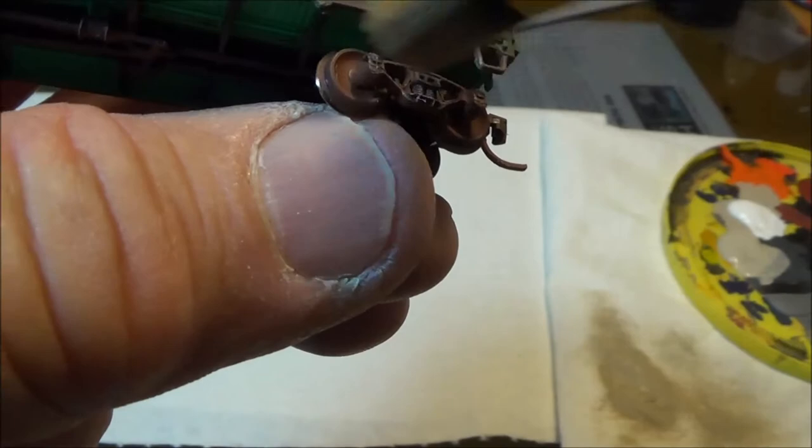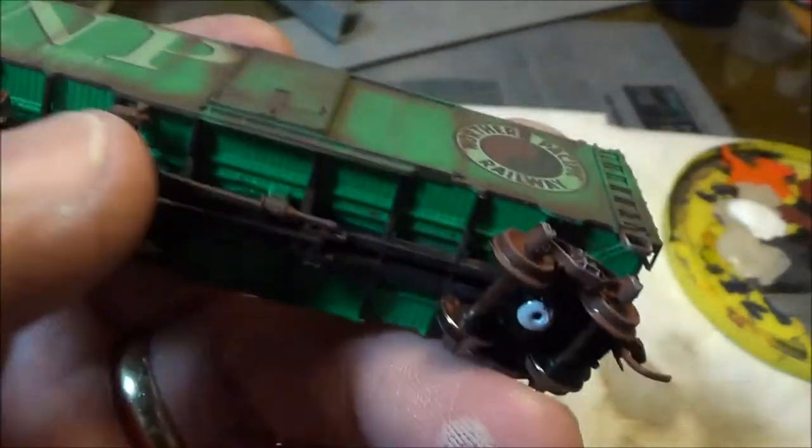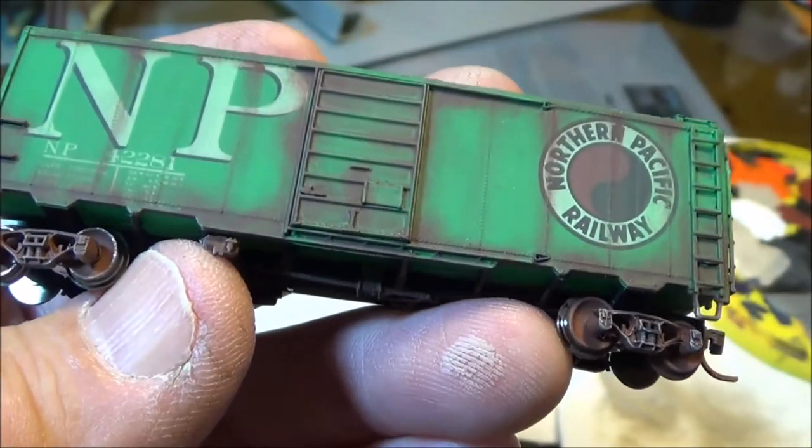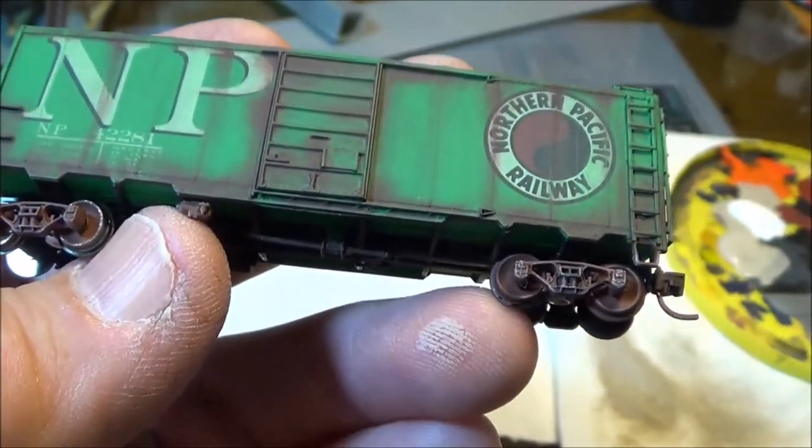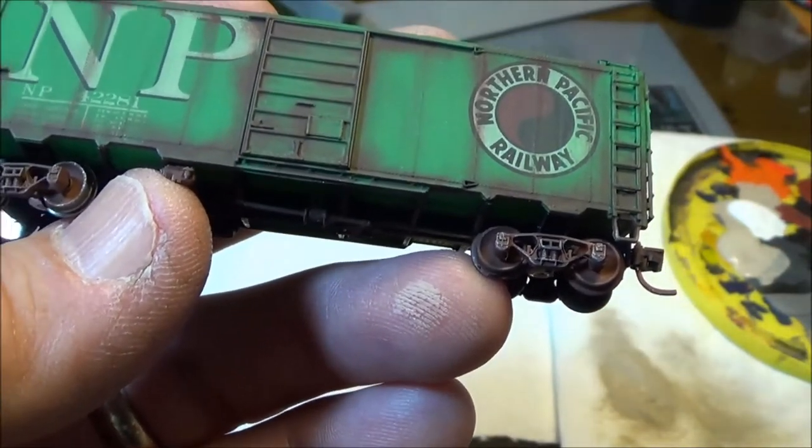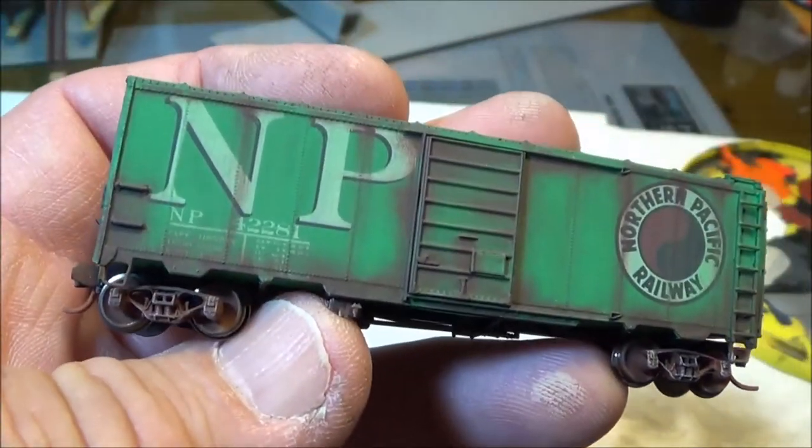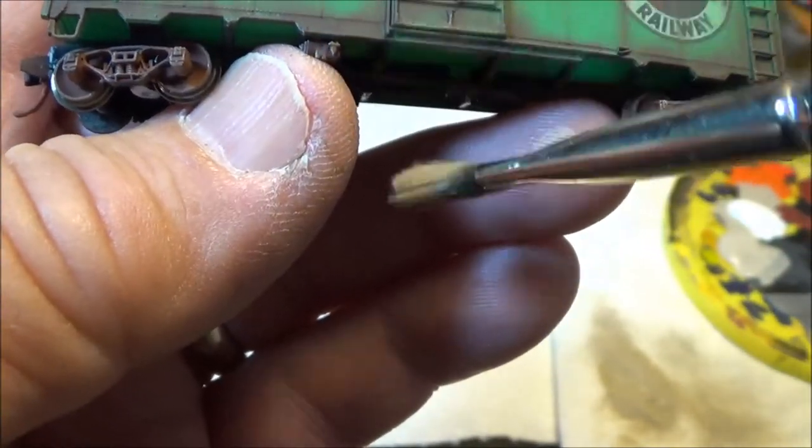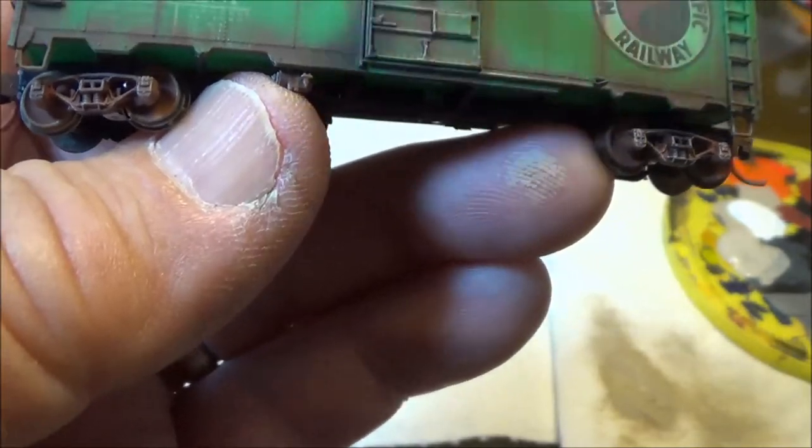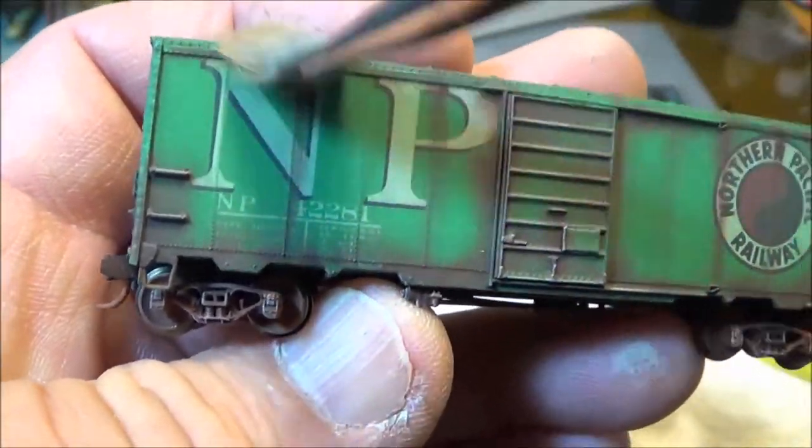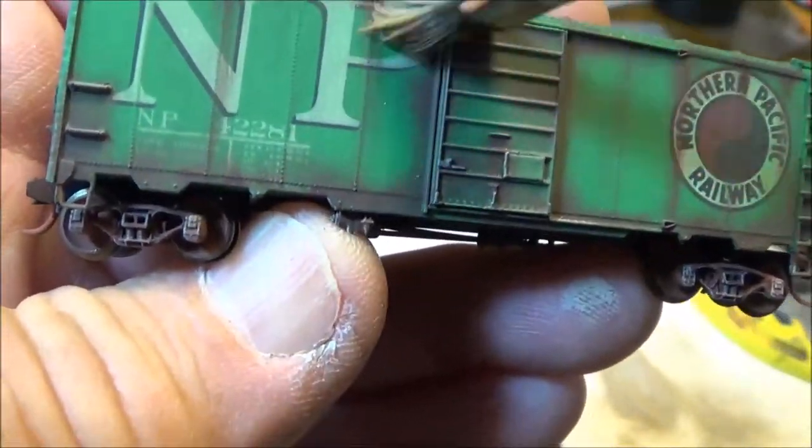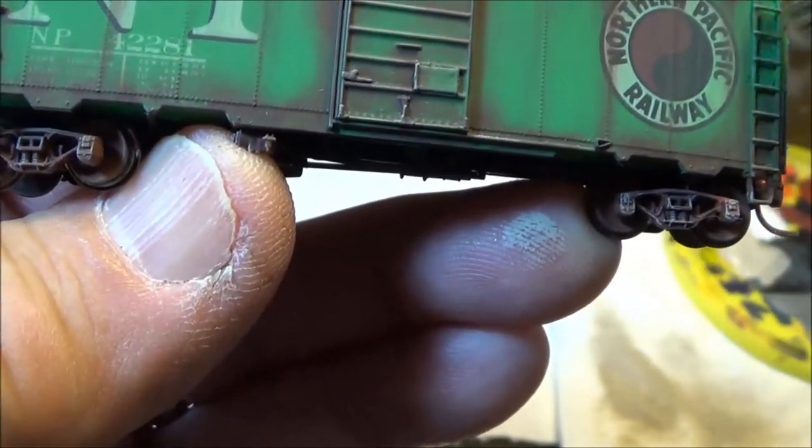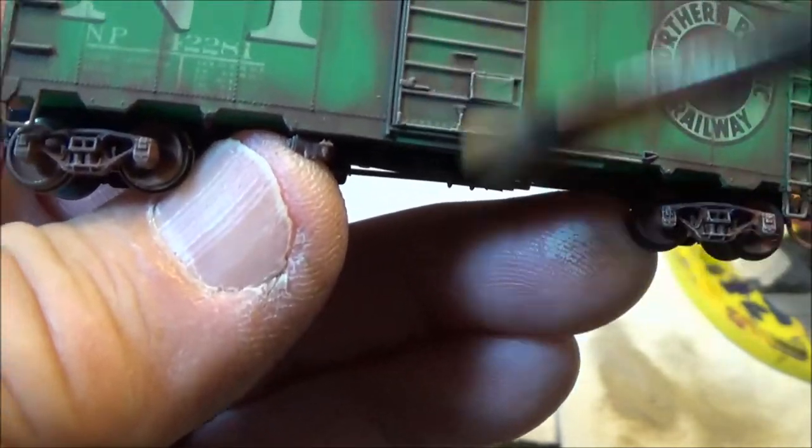You can see how it brings out the truck detail. Let's do the other trucks. Now that's, I mean, obviously you can see it's very light. I've wiped like 90, 95 percent of the paint off the brush. Now we're just going to swipe down the car here and get the grab irons and the top edges of the door ribs. And the top edge of the car, just ever so slightly, top edges of the ladders.